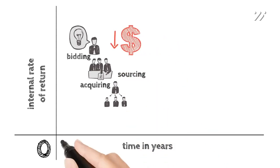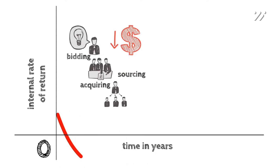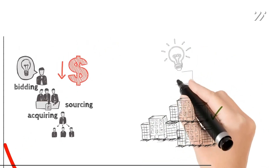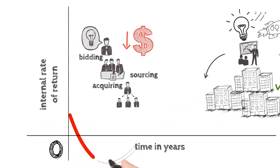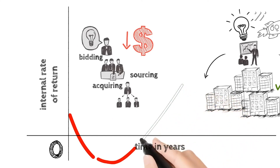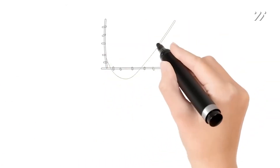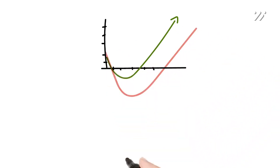However, this phase sets the groundwork for the future growth and success of the organization. As time progresses, the resources poured into the investment begin to yield results — this is where the J-curve takes its upward turn. The value of the investment starts to appreciate, often exponentially, due to factors such as increased customer adoption, improved operational efficiency, and optimized resource allocation.